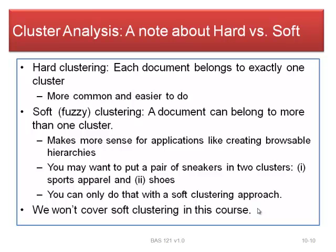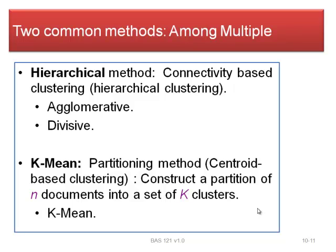You can instantly see the potential benefit of fuzzy clustering — Nike sneakers probably belong in both the sports apparel cluster and the shoes cluster. Some Google News articles might belong in both the sports section and the world news section. We won't cover fuzzy clustering here, but it's good to be aware of it. There are two primary clustering methods: hierarchical, which connects different clusters, and k-means, which is a partitioning method. The most common hierarchical approach is agglomerative, which we'll demonstrate.